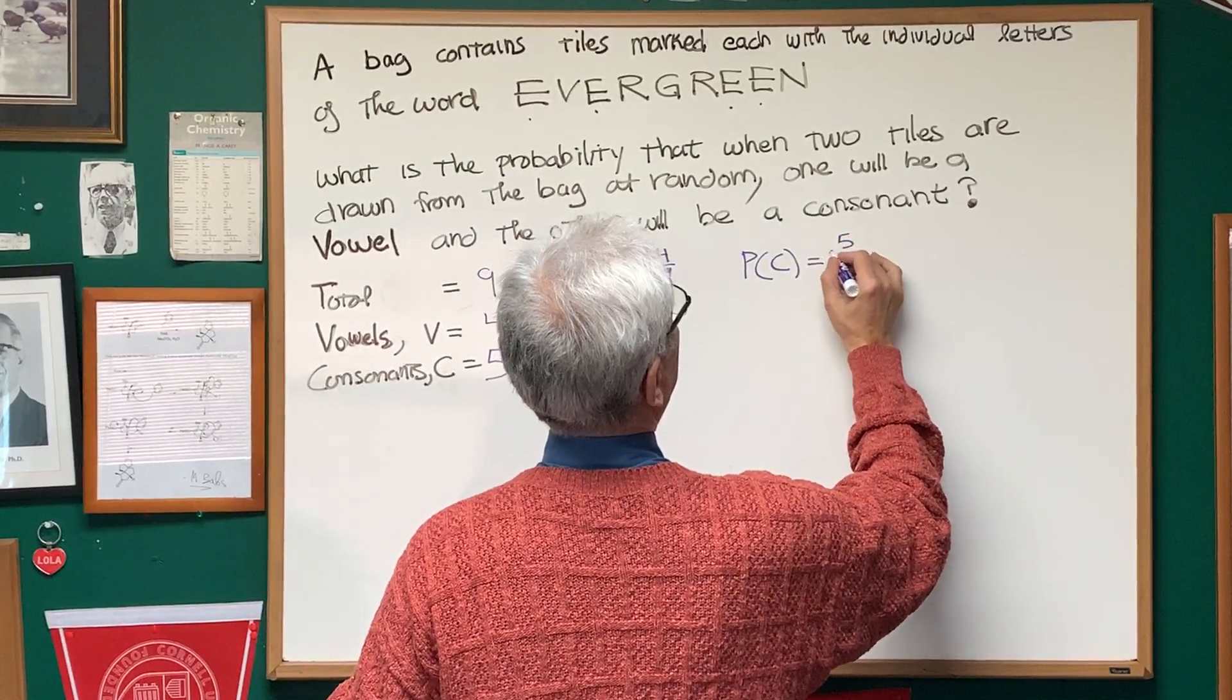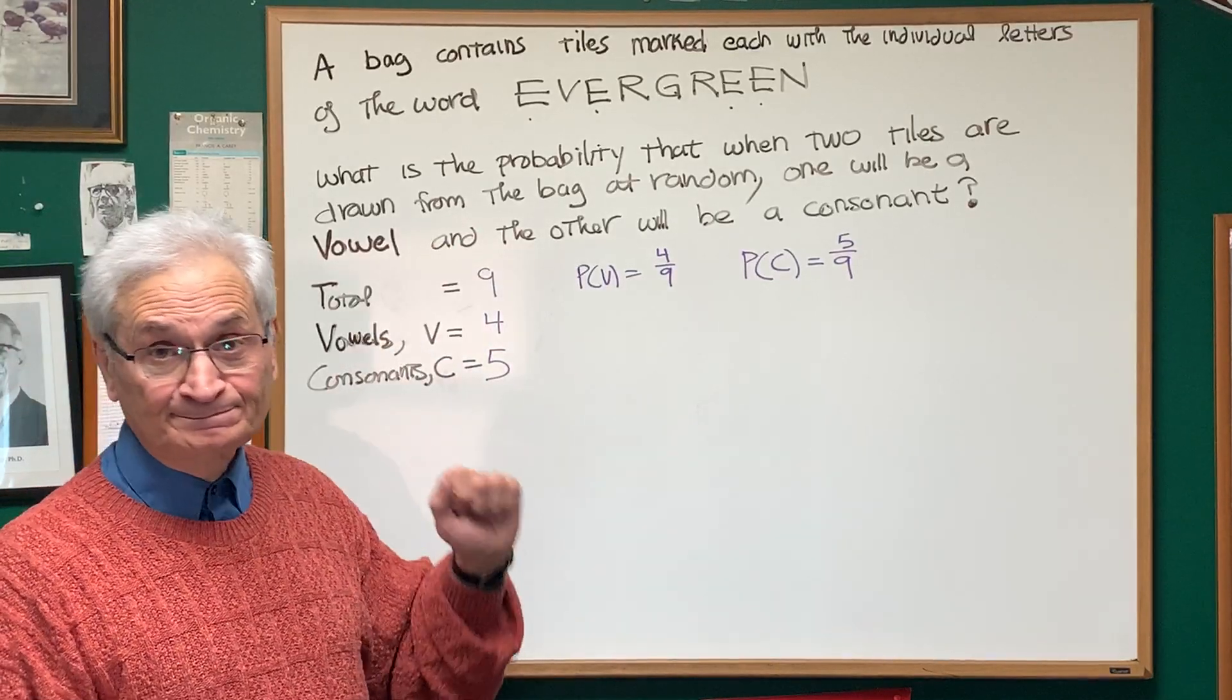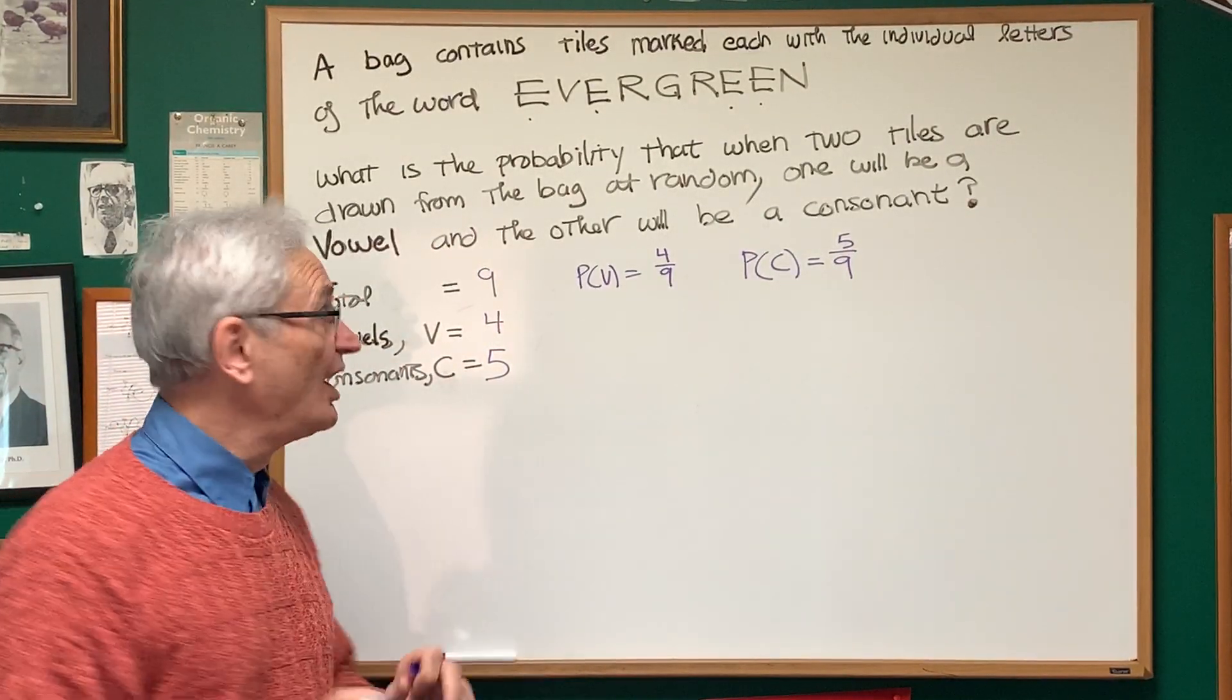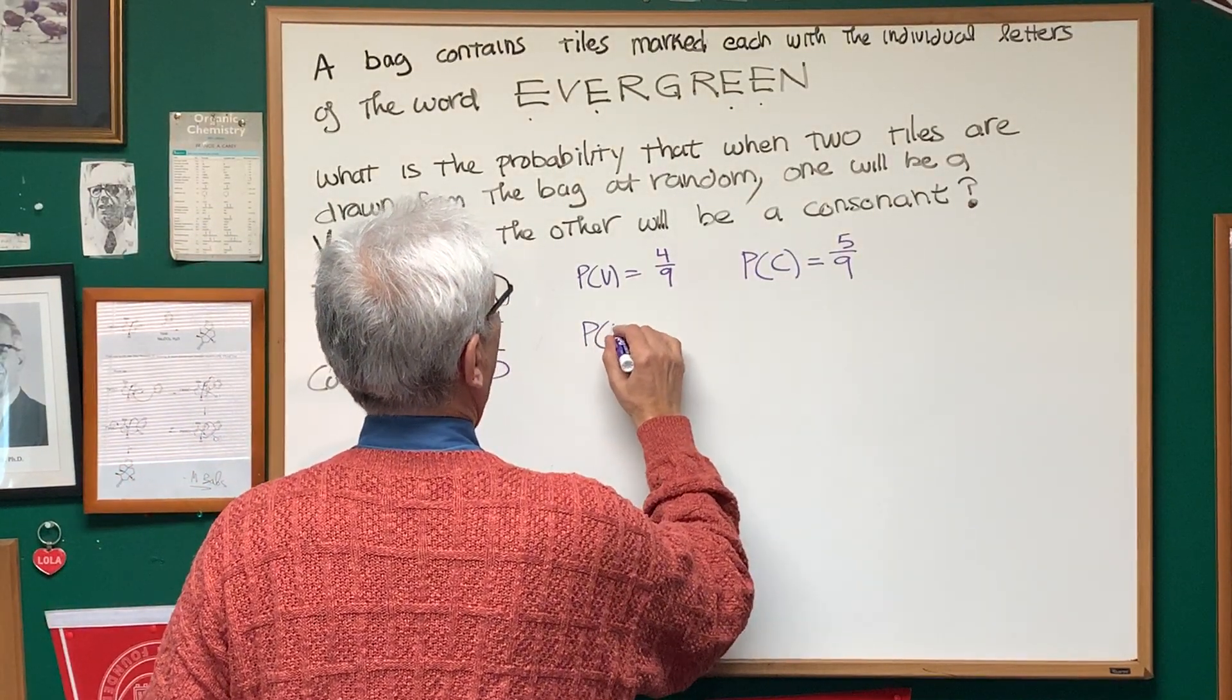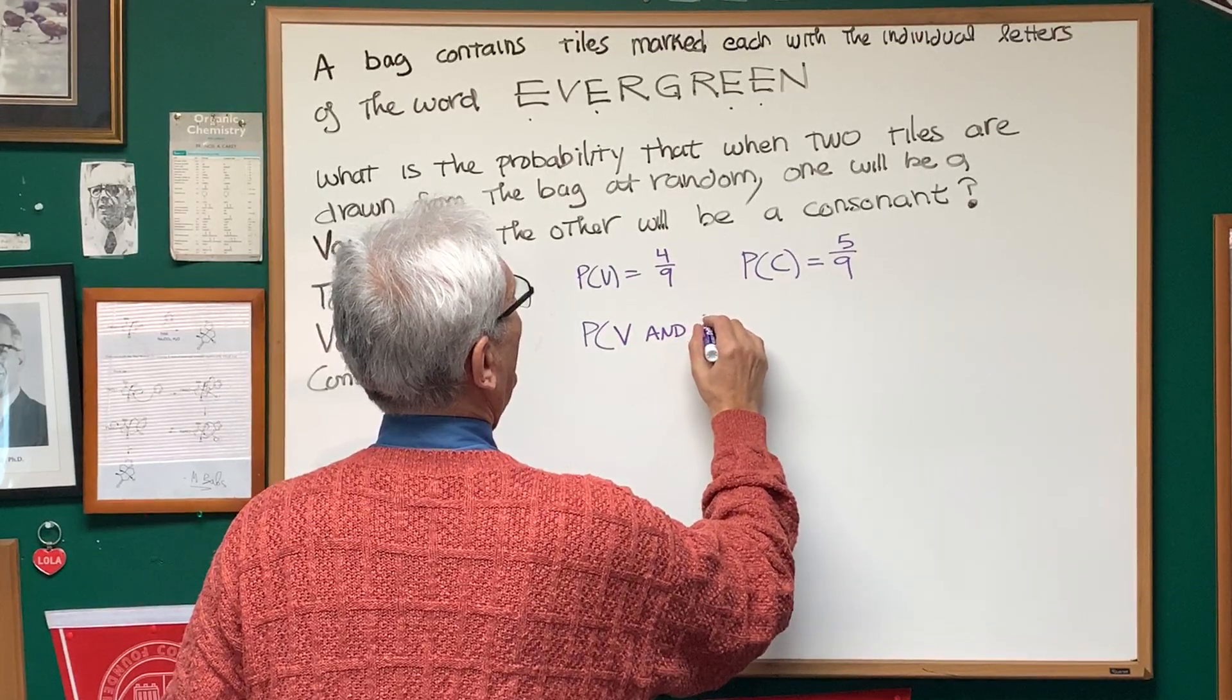What's the probability that I'm going to choose a consonant if I just choose one tile? Well, it's the total number of consonants, which is five, over the total number of tiles, which is nine. Okay, but now we're going to be choosing these sequentially. We want the probability of a vowel and then a consonant.